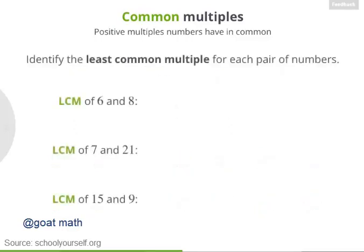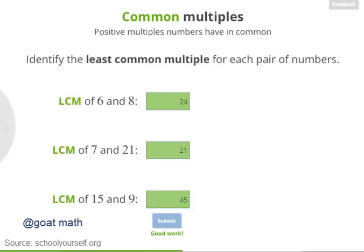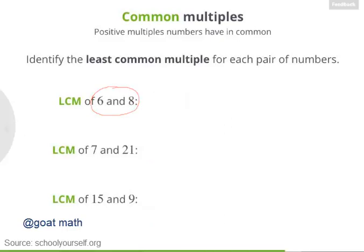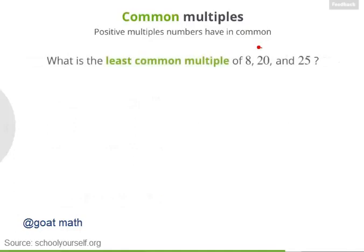Next, try identifying the LCMs for each of these pairs of numbers. Excellent! The LCM of 6 and 8 is 24. The LCM of 7 and 21 is 21 itself, because 7 is a factor of 21. And the LCM of 15 and 9 is 45. Next, what's the LCM of 8, 20, and 25? So now we're looking for the smallest multiple that all three of these numbers have in common. One way to approach this is to look at the multiples of the biggest number, which is 25 for this example.